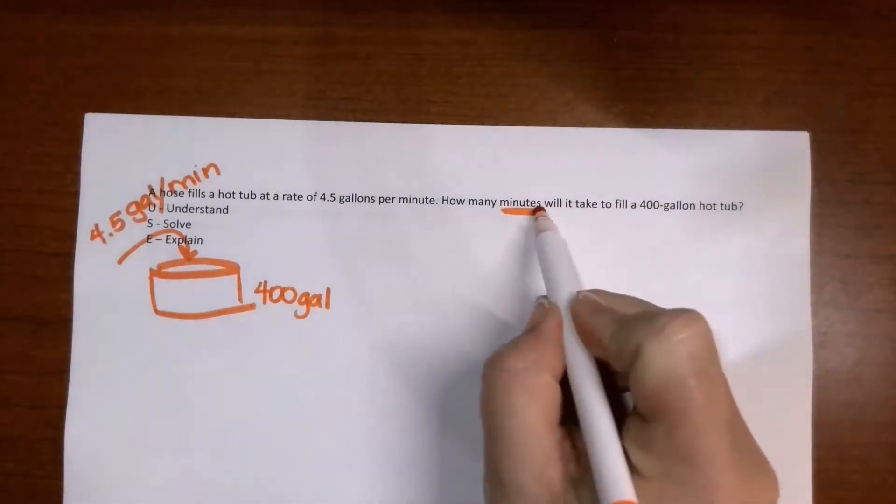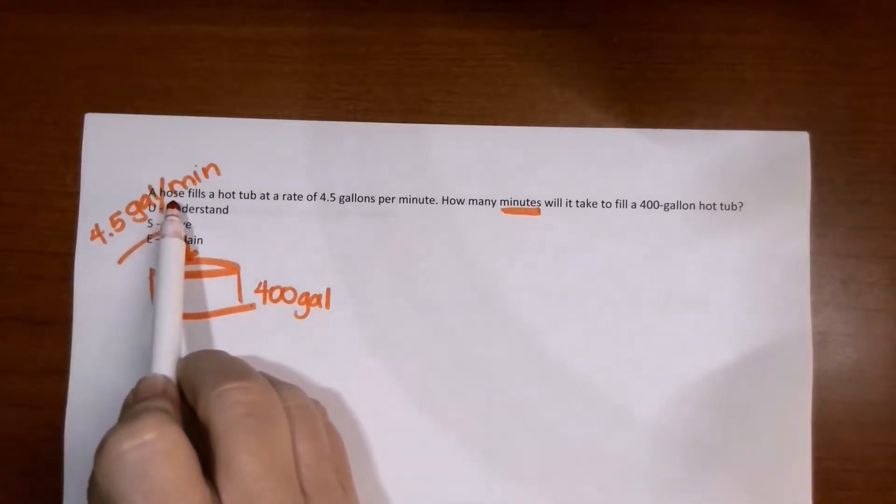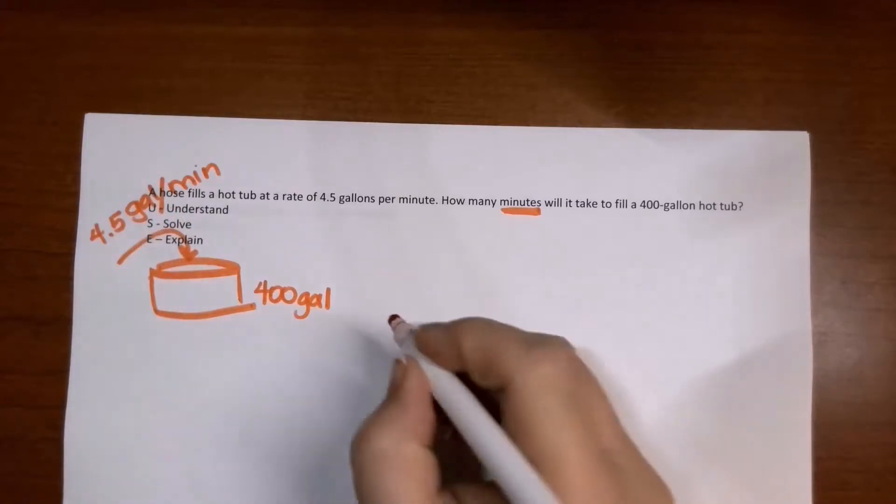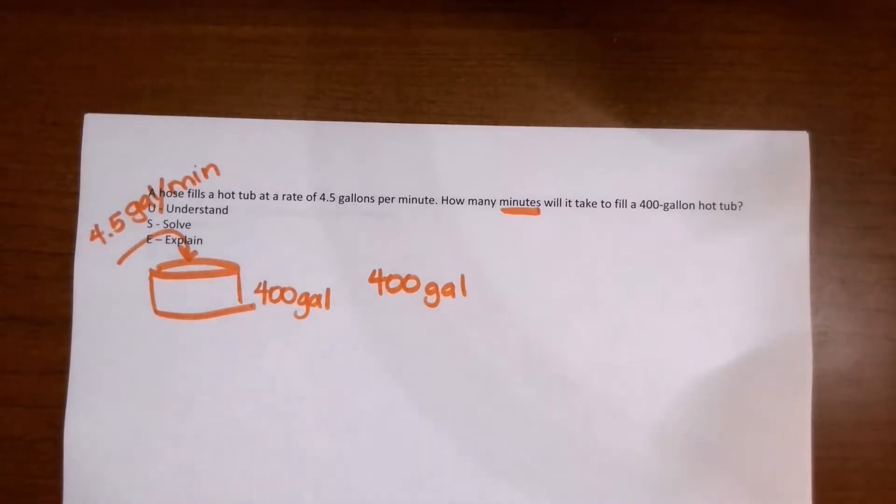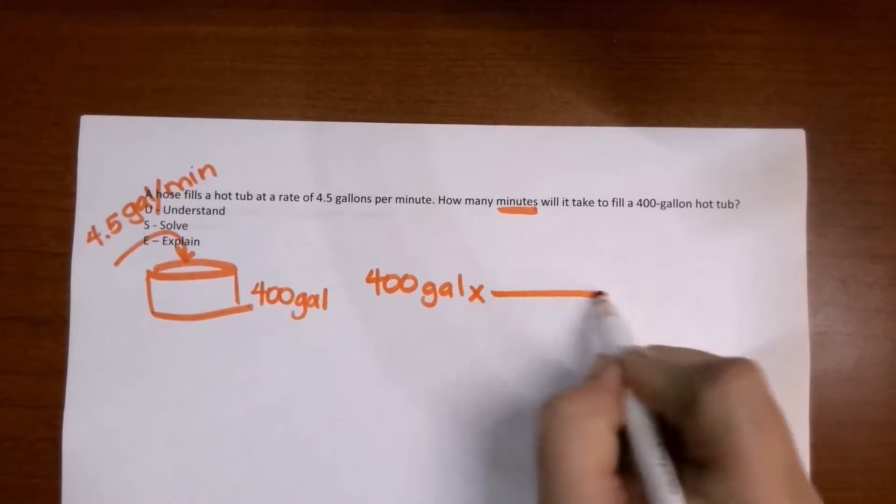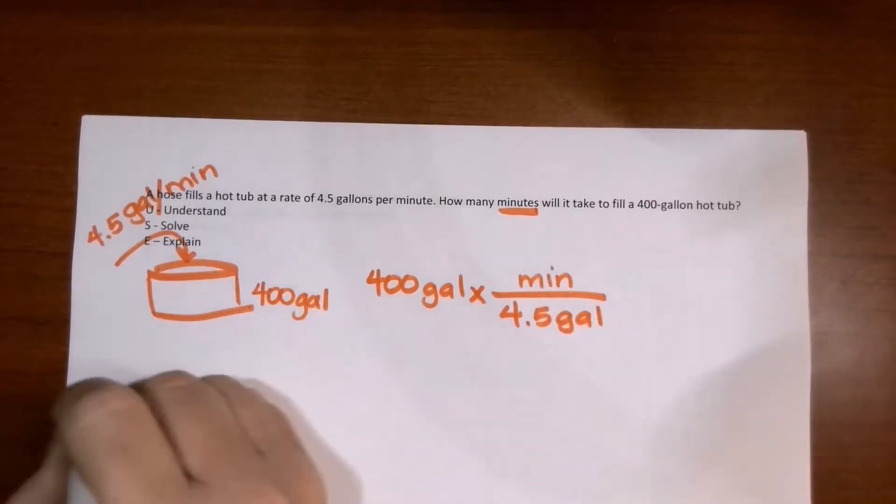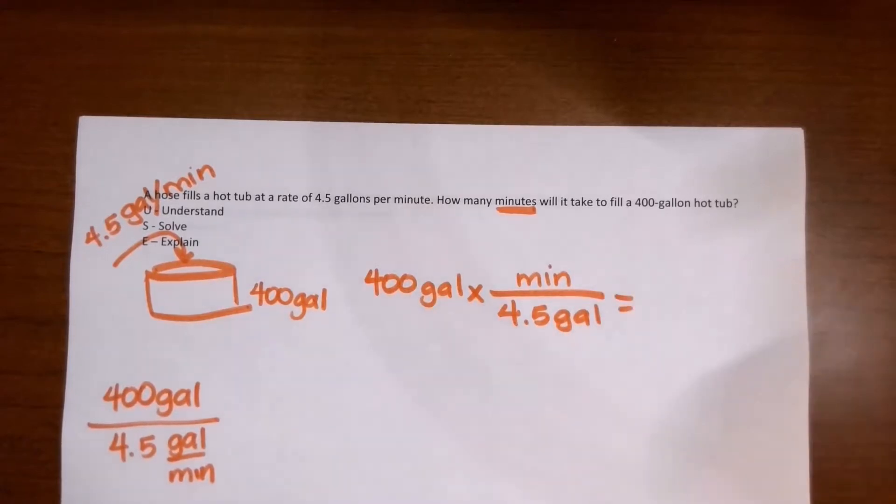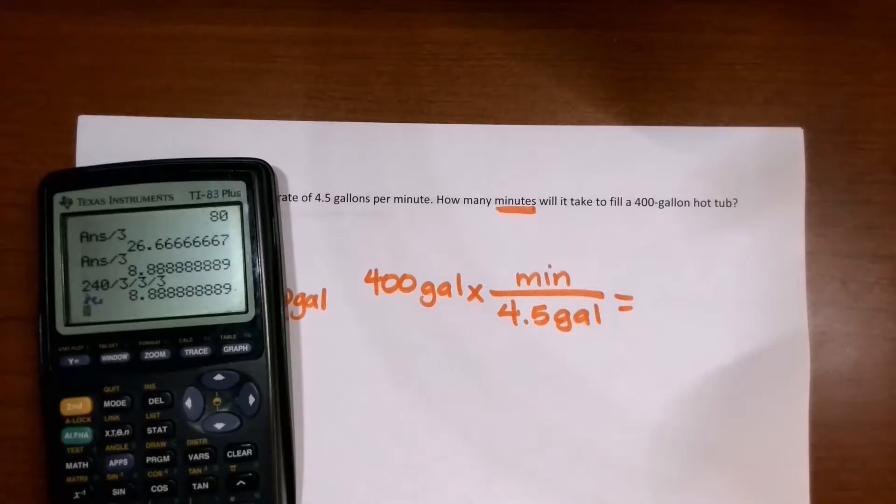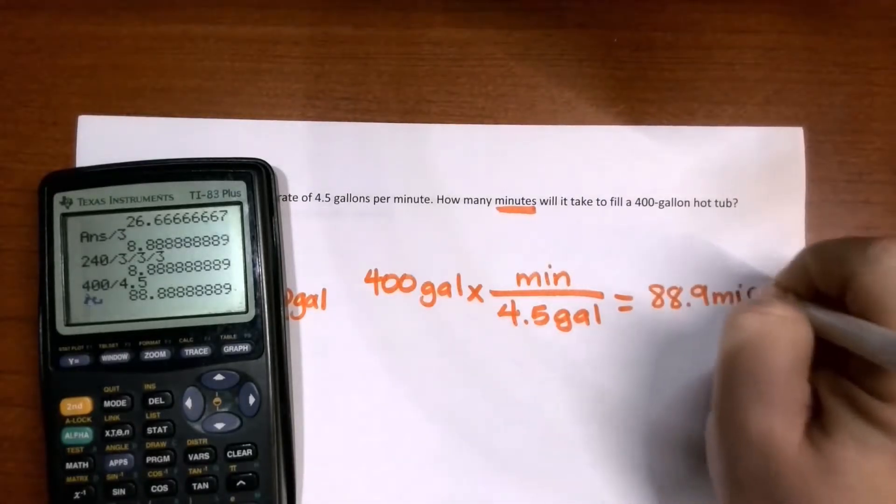It says how many minutes will it take to fill a 400-gallon hot tub? So I know in the end I need these minutes on top. My final answer is minutes. So I take 400 gallons. And I really want to divide that by 4.5 gallons per minute. That is equivalent to writing 400 gallons divided by 4.5 gallons per minute. Let's do the math here. That will be 400 divided by 4.5, and that's going to be 88.9 gallons.